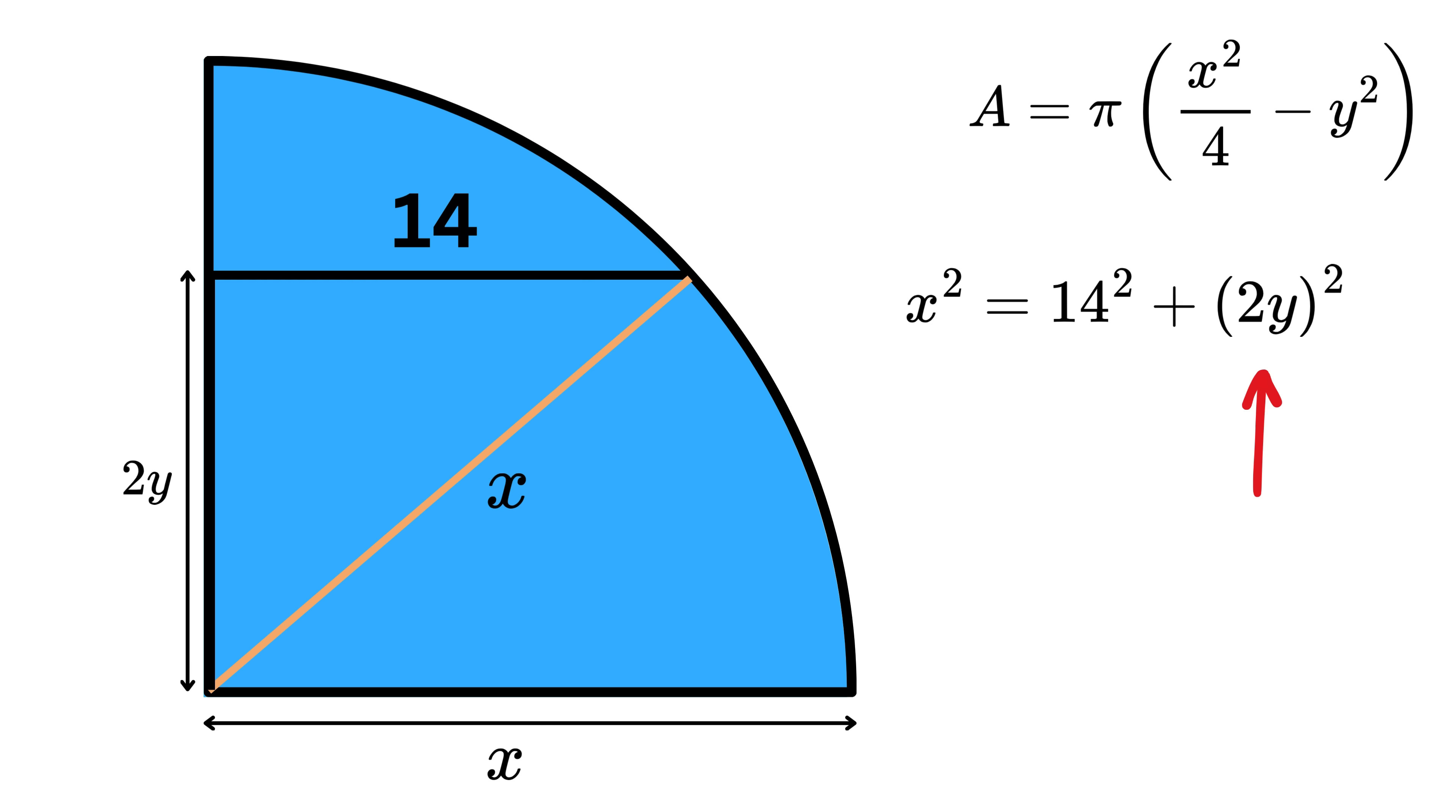Time to use our most loved right triangle theorem, the Pythagorean theorem. We get x² = 14² + (2y)². 2y whole squared is the same as 4y². Now take it to the left hand side to get x² - 4y² = 14² = 196.